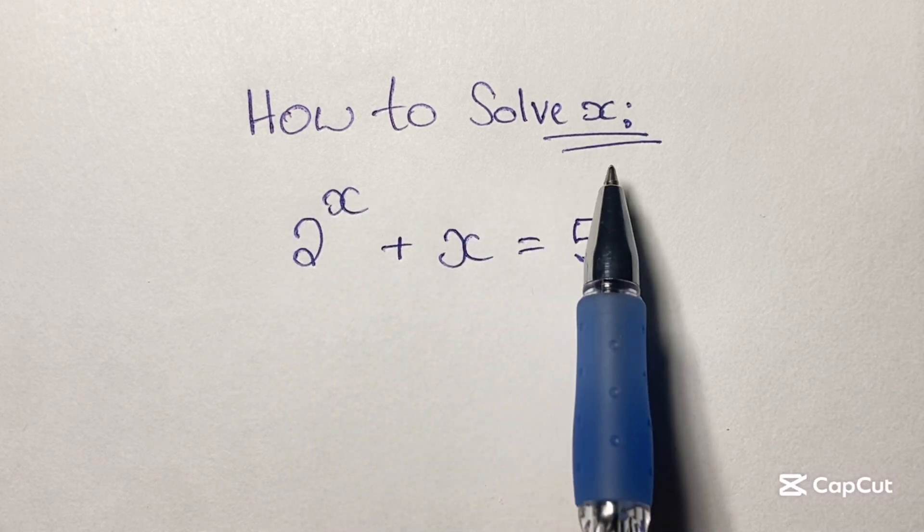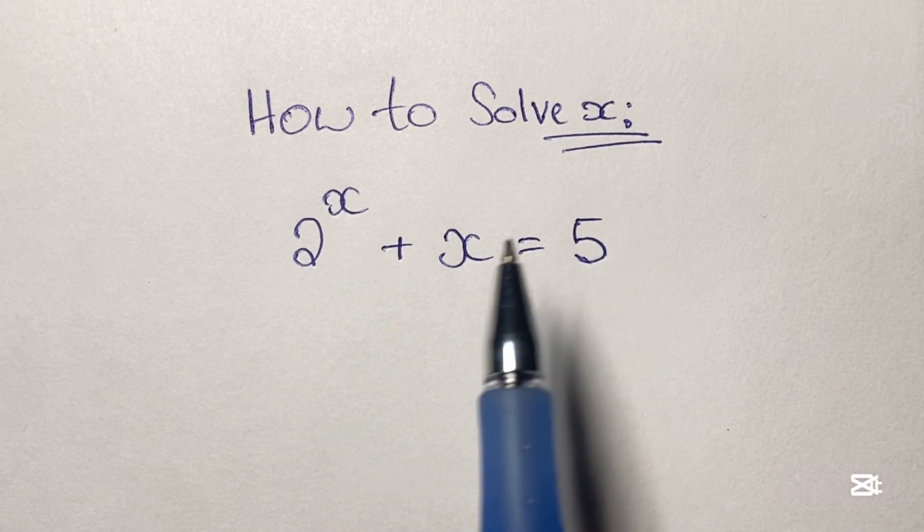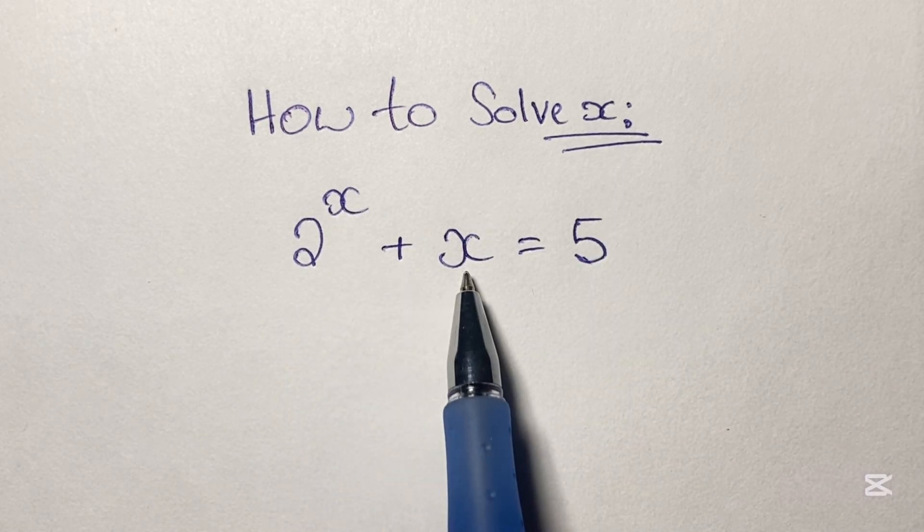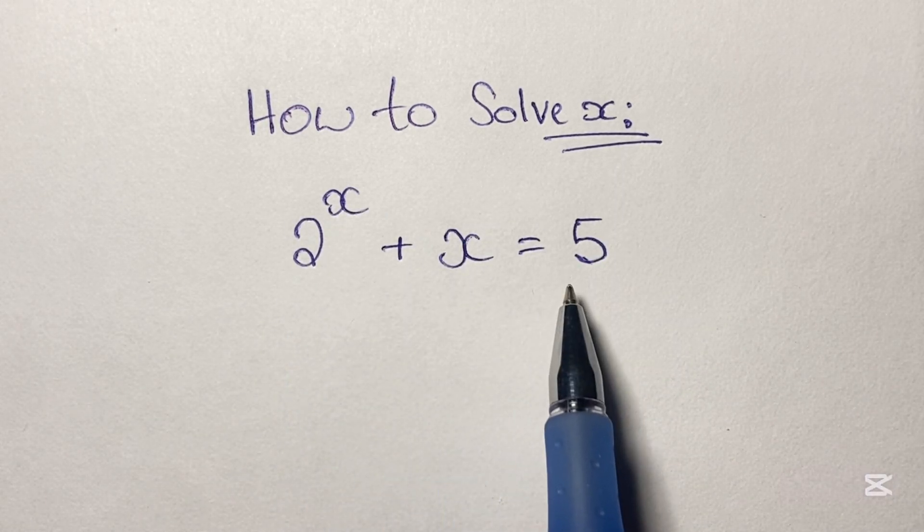Greetings again everyone. How to solve x in this situation where we have 2 to the power of x plus x is equal to 5.